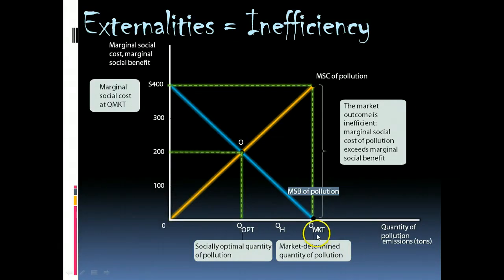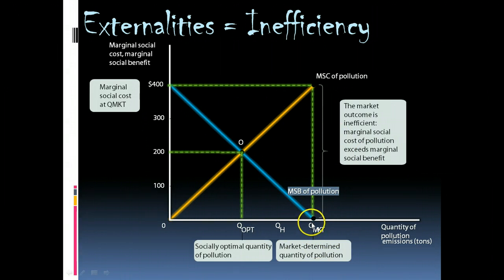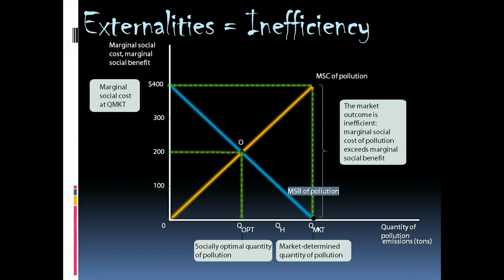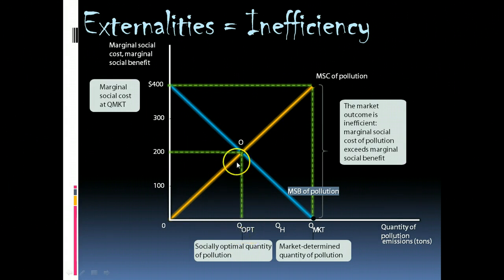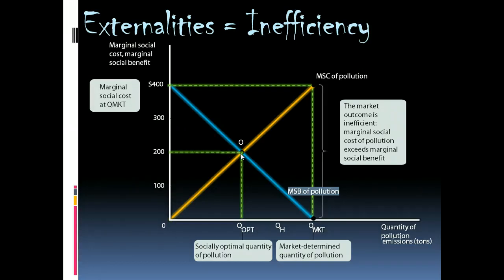We can see that's a problem, because at that level of pollution the cost to society is $400 per ton of emissions. Clearly there is a cost that needs to be incorporated when making a decision. When we look at the supply and demand intersection, the optimal level of pollution was at Q optimum and at a price of $200 per ton of emissions. So externalities can lead, in some cases, to either overproduction of a negative or underproduction of a positive.